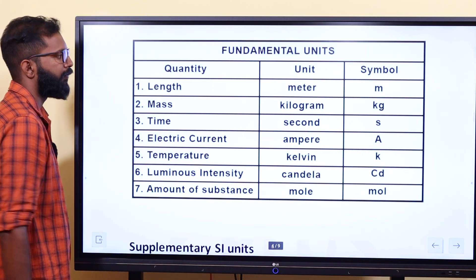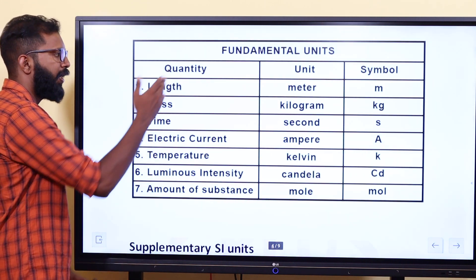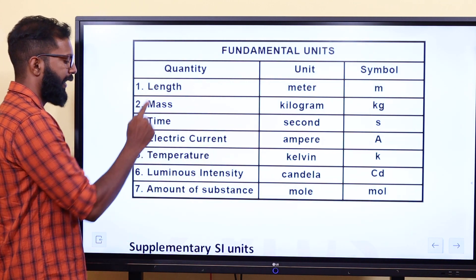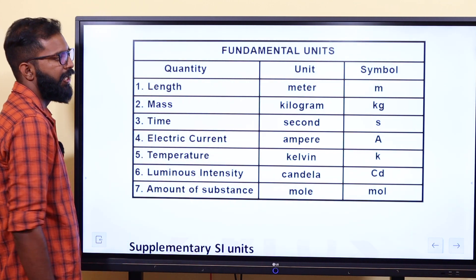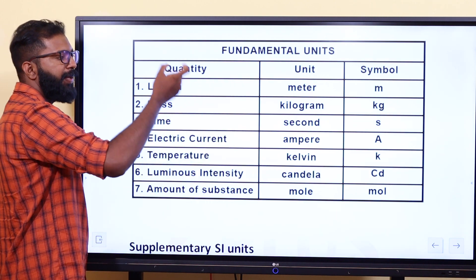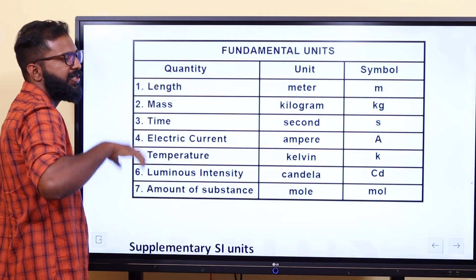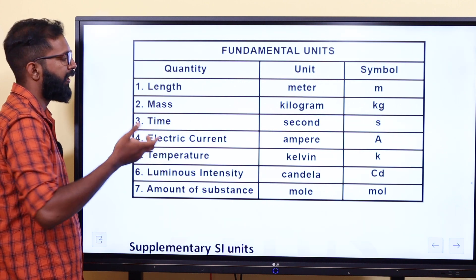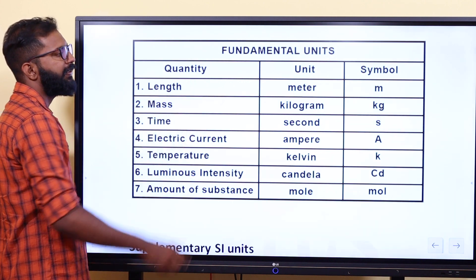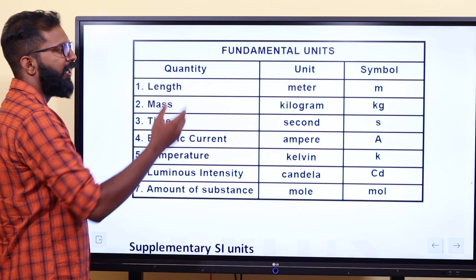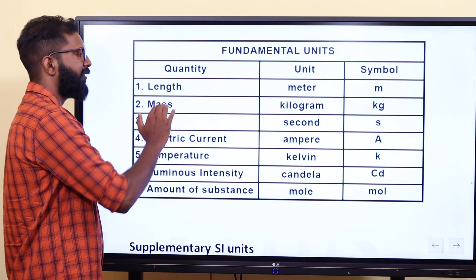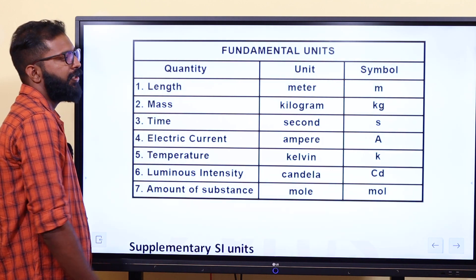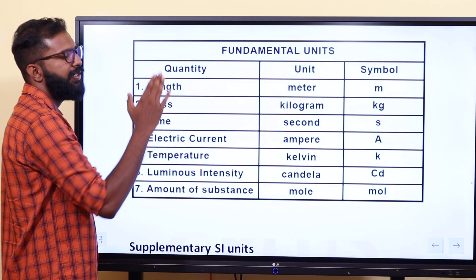In the SI system, the quantity, unit, and symbol are as follows: Length is measured in meter, with symbol m. Mass is measured in kilogram, with symbol kg.